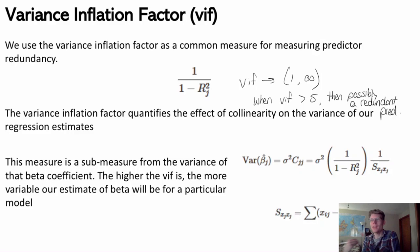Again, it just depends on context — we don't necessarily need to cut a predictor just because its VIF is above 5. If we're doing modeling for prediction, we can set a higher bar because it's not so bad to have a lot of predictors as long as we're not overfitting. So it's not a big deal to have some redundant predictors there.